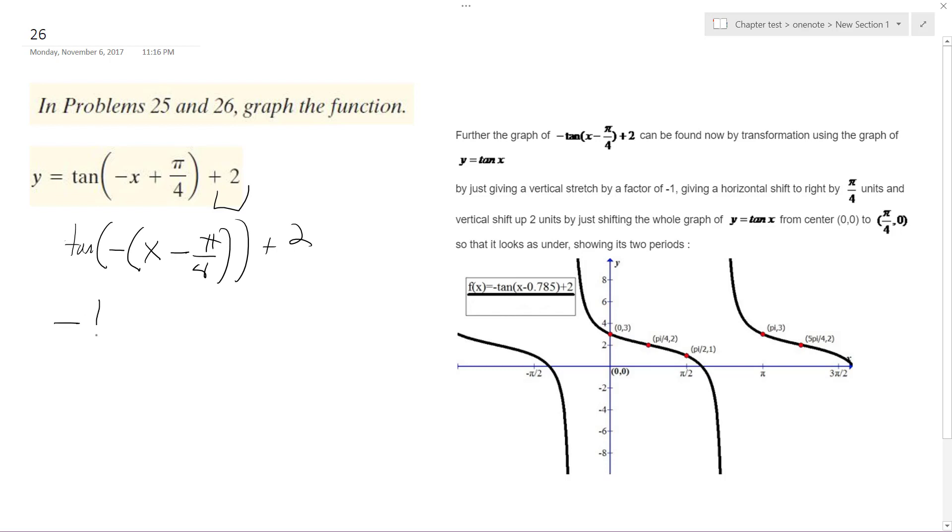We can factor this out, so it's negative tangent because I can pull out the negative, x minus pi over 4.